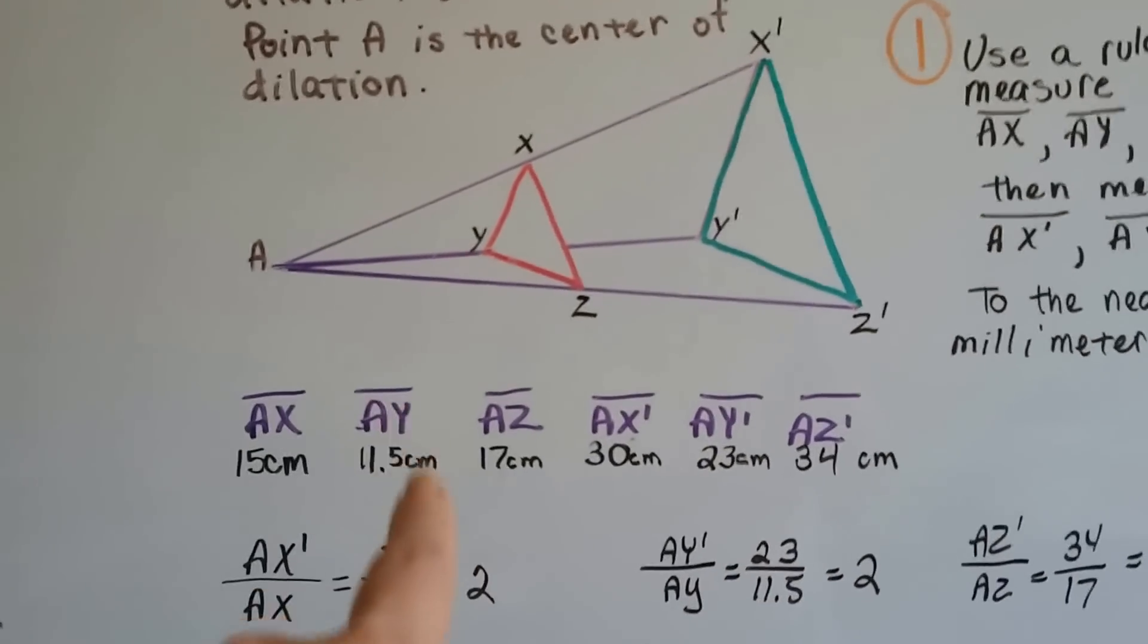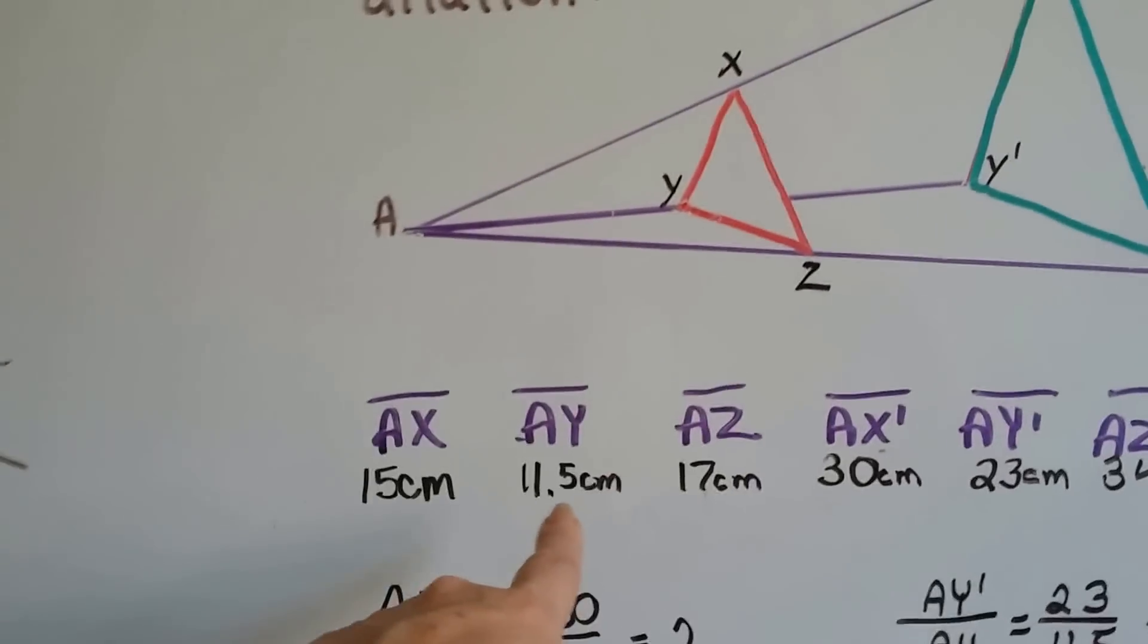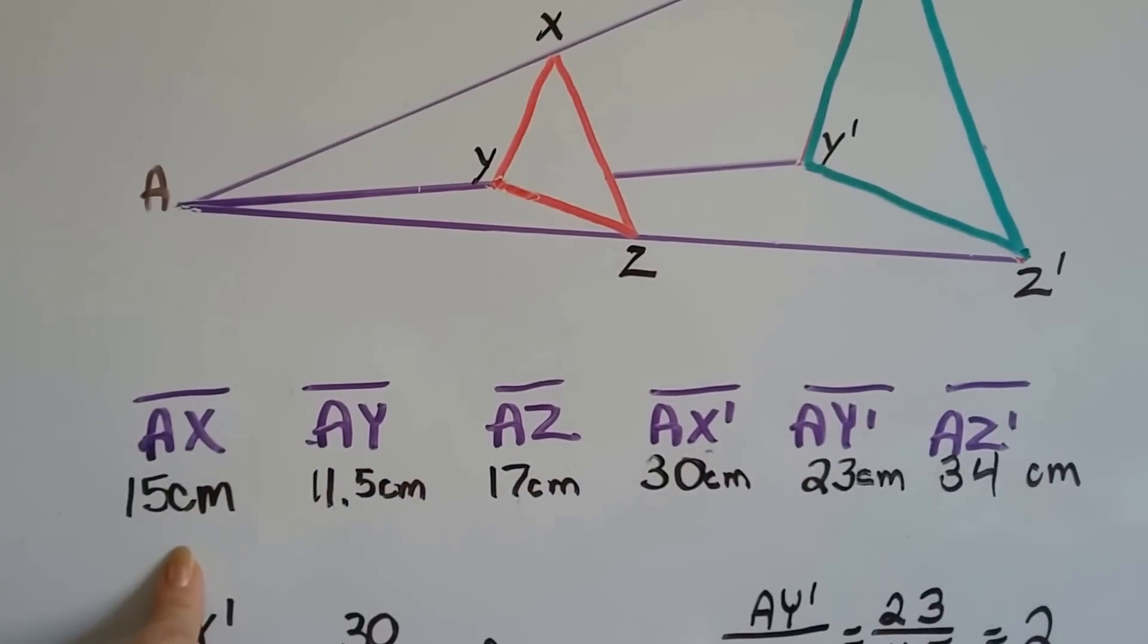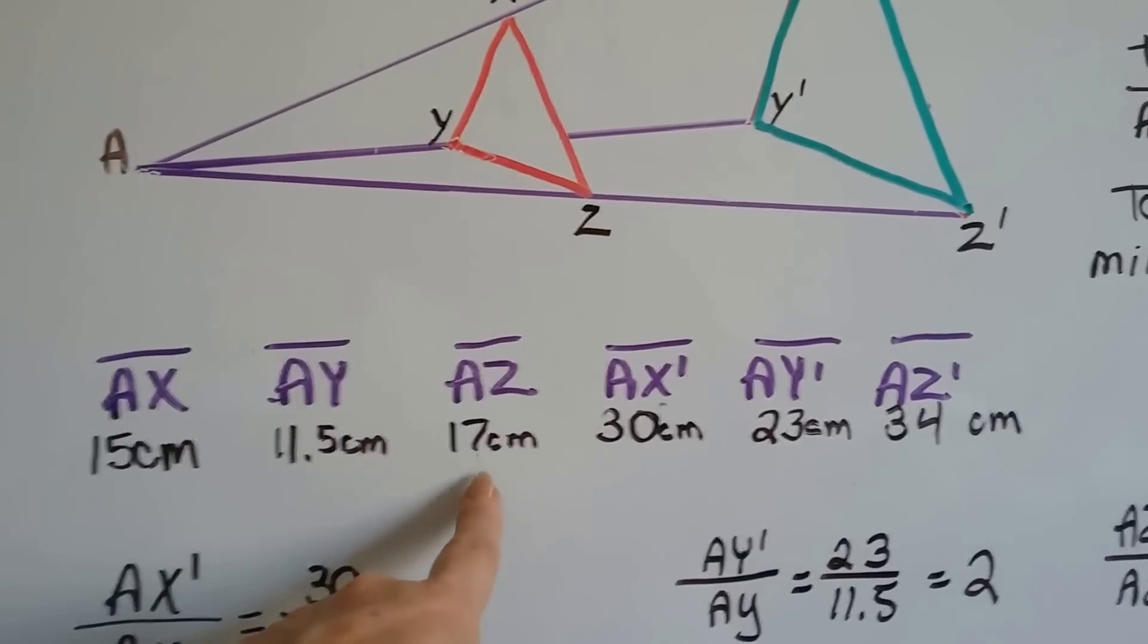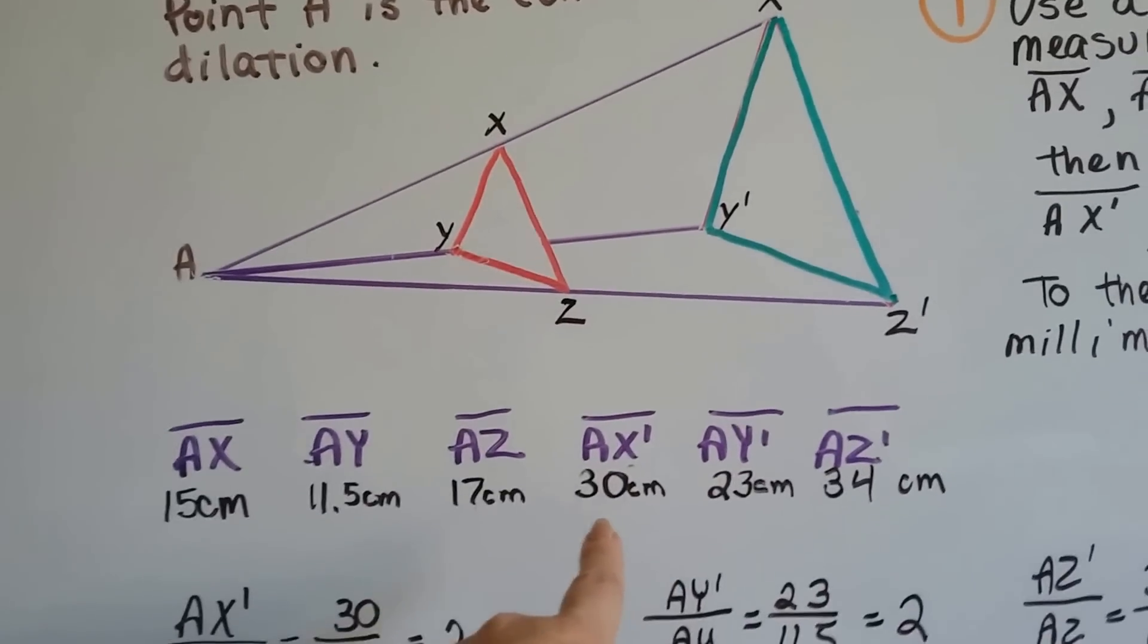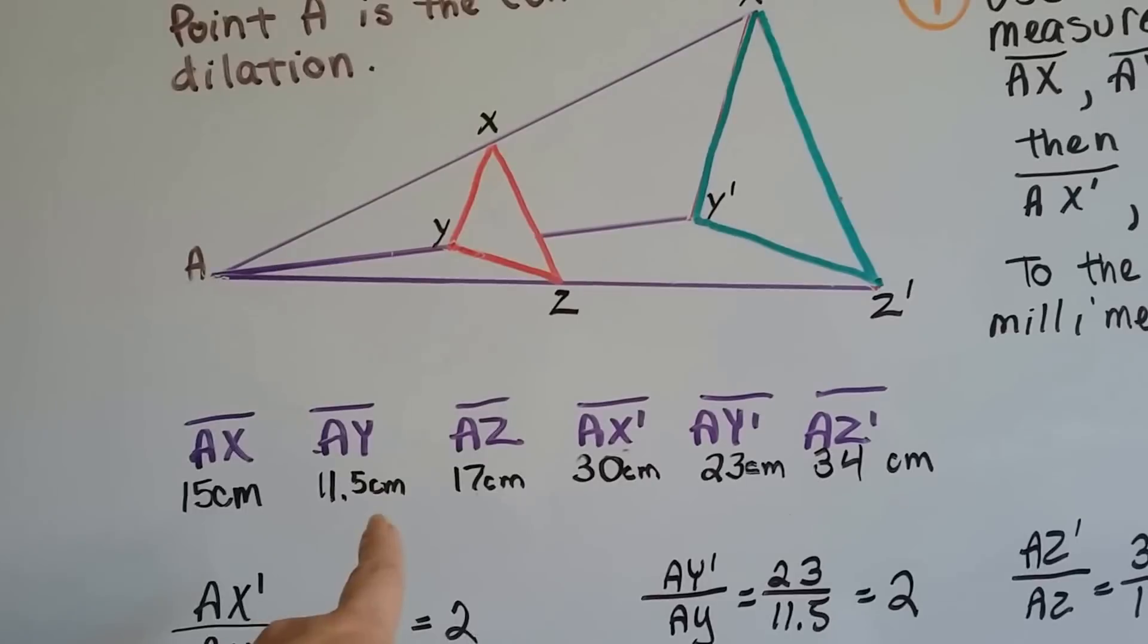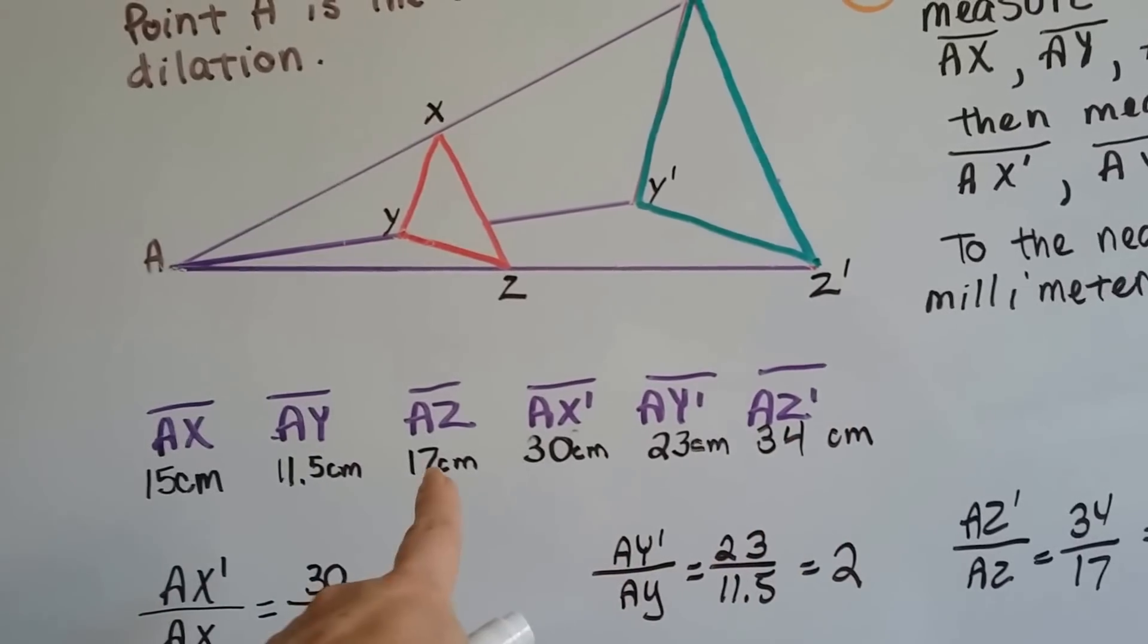We don't write it in millimeters. We don't have to. We can write it in centimeters. But if we know to the nearest millimeter, we know we've got 11.5 centimeters. That would be 115 millimeters. So, we've got our measurements. From A to X is 15 centimeters. And from A to Y is 11.5 centimeters. And from A to Z is 17 centimeters. Now, we measure from A to X prime. A to X prime is 30. Ooh, look at that. It's two times that one. A to Y prime is 23. Well, 11 plus 11 is 22. And a half and a half is 1, so that's 23. And A to Z prime is 34. From A to Z prime. And look, 17 times 2 is 34.